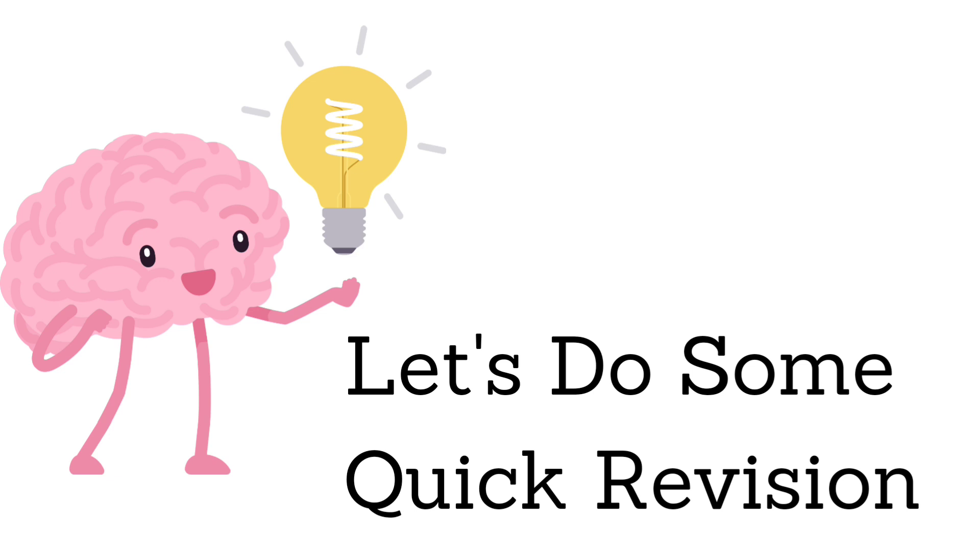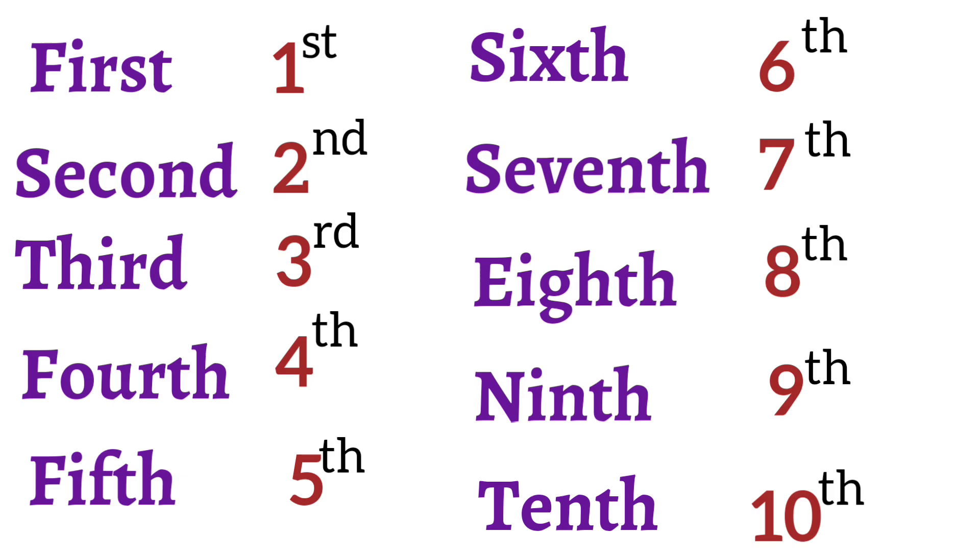Let's do some quick revision of ordinal numbers with their spellings. First: F-I-R-S-T. Second: S-E-C-O-N-D. Third: T-H-I-R-D. Fourth: F-O-U-R-T-H. Fifth: F-I-F-T-H. Sixth: S-I-X-T-H. Seventh: S-E-V-E-N-T-H.